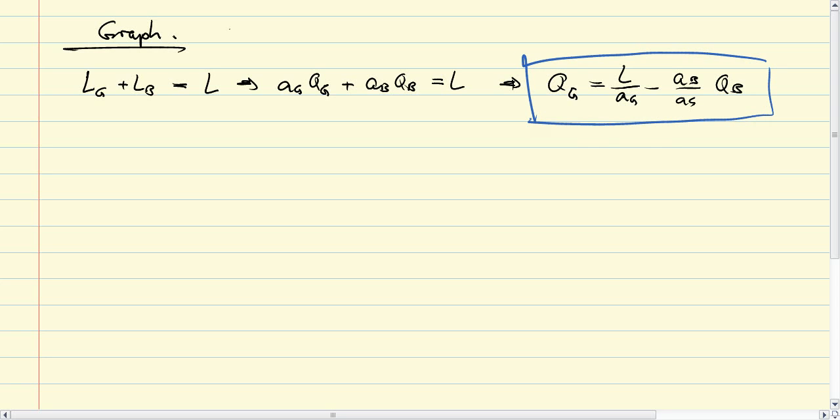That is the production possibility function in the form that we can easily graph. If we put QG on this axis and QB on this axis, then suppose QB were just equal to zero—this point here would be L over AG.